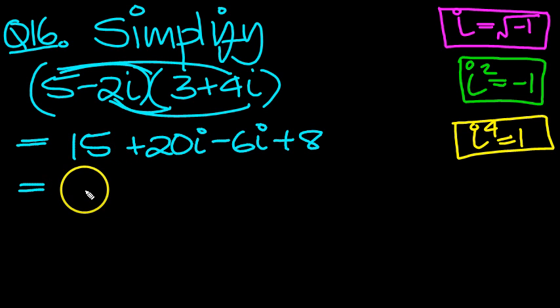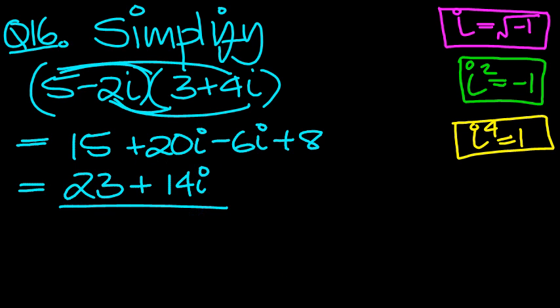15 plus 8 then, collect the reals, is 23. Now collect the imaginaries. 20 take 6 is just 14 lots of i. 23 plus 14i.